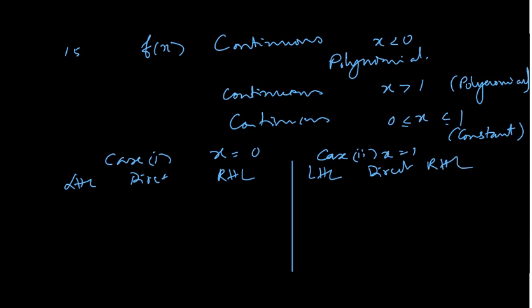When we do LHL for x equals 0 — that means less than 0 — that is 0 minus h. So limit x tends to 0. When we substitute 0 minus h, that is nothing but 2 into (0 minus h). When you substitute 0 here, the answer is 0. Direct value means x equals 0.